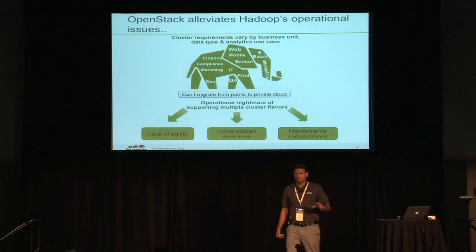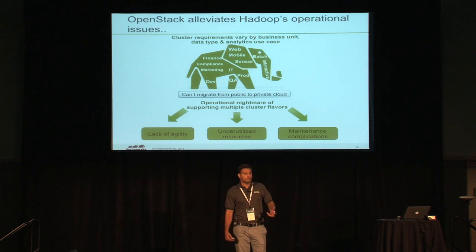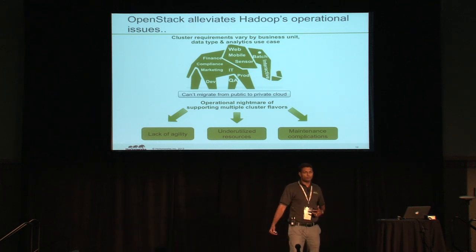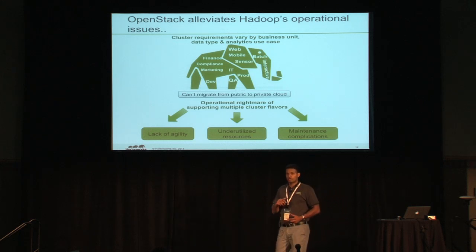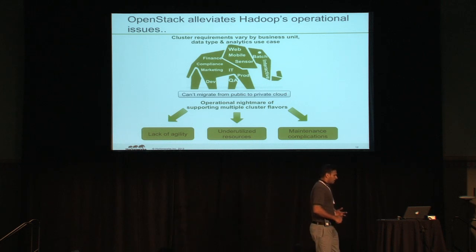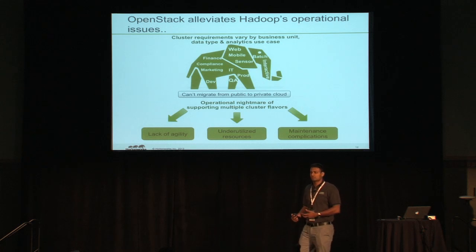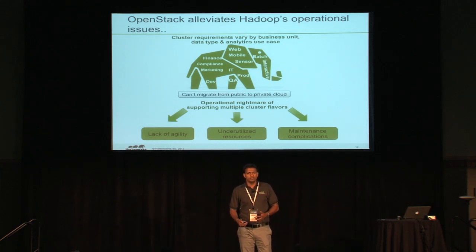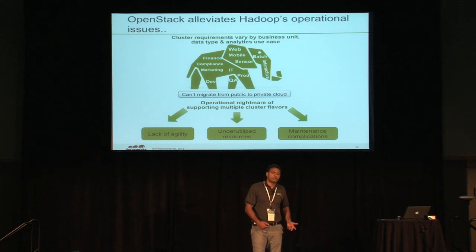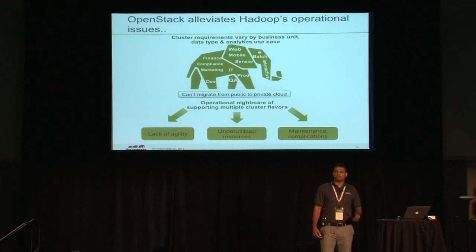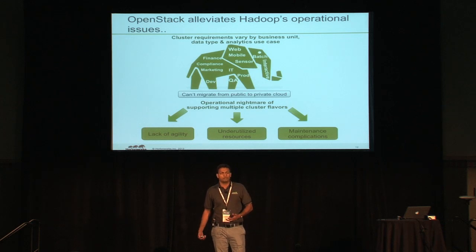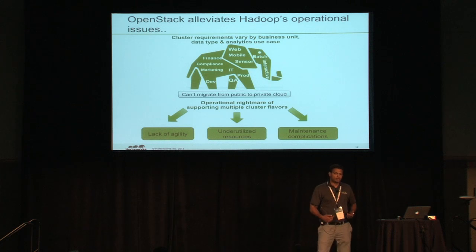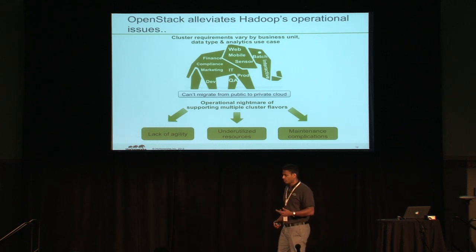To solve that problem, customers started going to Amazon, spinning up a cluster, doing basic testing, and then wanting to bring things in-house. The fundamental gap is that on Amazon it's not the environment the customer controls, so just because something works on AWS doesn't mean it will work in your own private cloud deployment. This is what OpenStack really brings to the table for Hadoop — it provides a way to alleviate all the different operational complexities of running a Hadoop cluster within the enterprise.